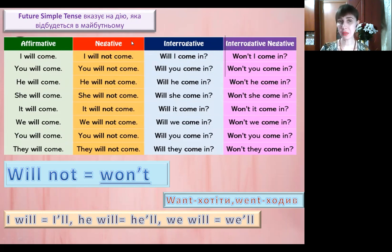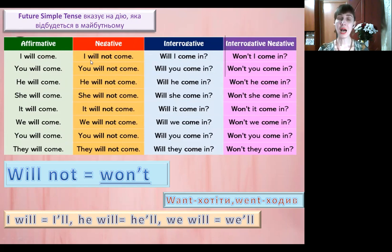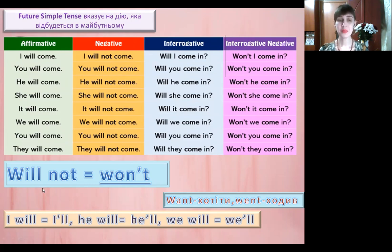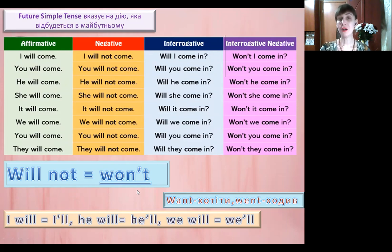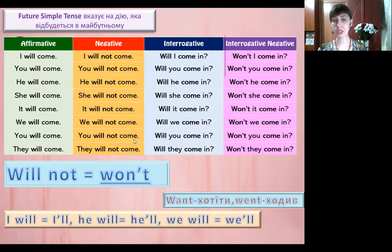Negative form – як будуємо заперечне речення? Ми підставляємо заперечну частку not. A negative particle not is used in a negative sentence. I will not come, you will not come, he will not come. Will not is won't. Ми можемо will not скоротити до слова won't. So let's speak like this: it won't come, we won't come, you won't come, they won't come.